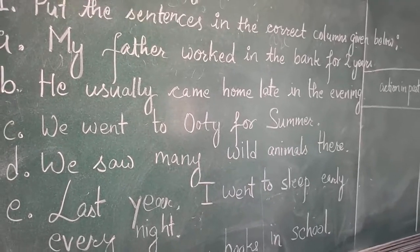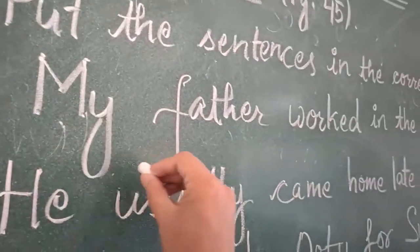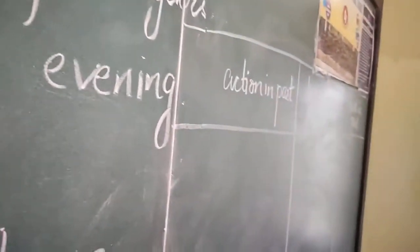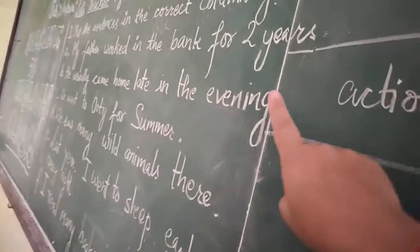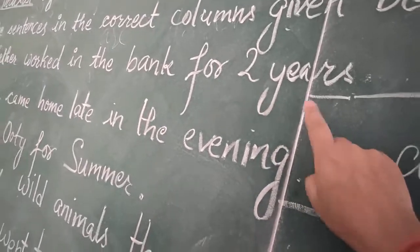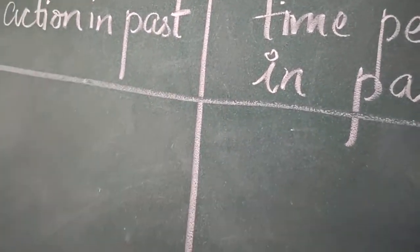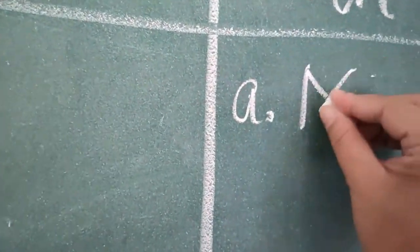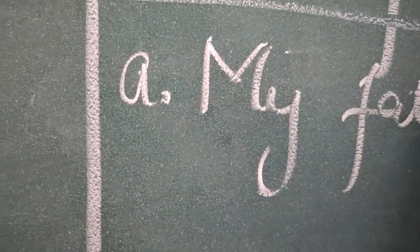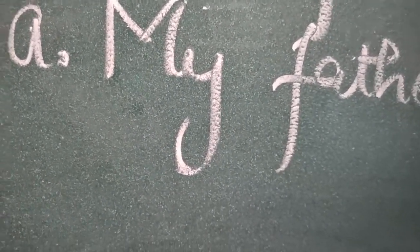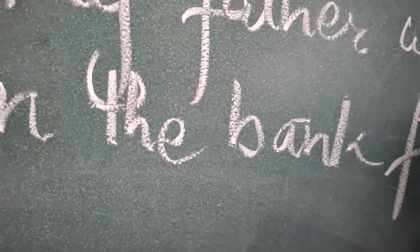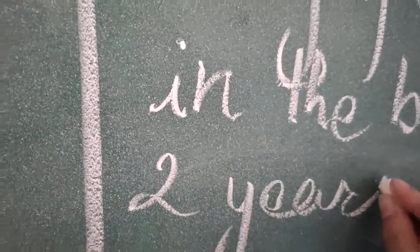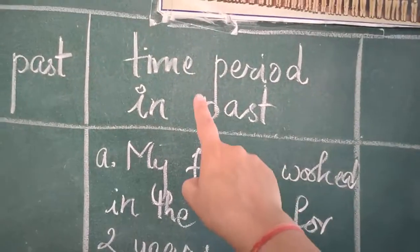So these are sentences in simple past form. You have to divide the sentences according to their expressions. Sentence A: 'My father worked in the bank for two years.' This sentence is telling something about a time period in the past because two years is mentioned. So we will put sentence A in the 'Time period in past' column: My father worked in the bank for two years.